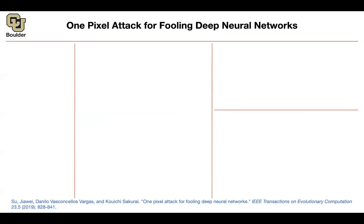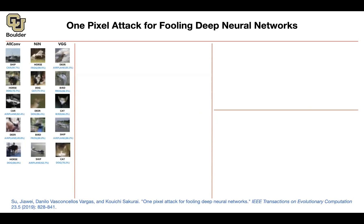The next paper is interesting because it takes attacks to the extreme — you can actually change one pixel in an image and fool a deep neural network. For example, you have a ship, change one pixel, and it turns into a car. A horse turns into a frog. You can change a cat to a dog by changing only one pixel. These are impressive results.